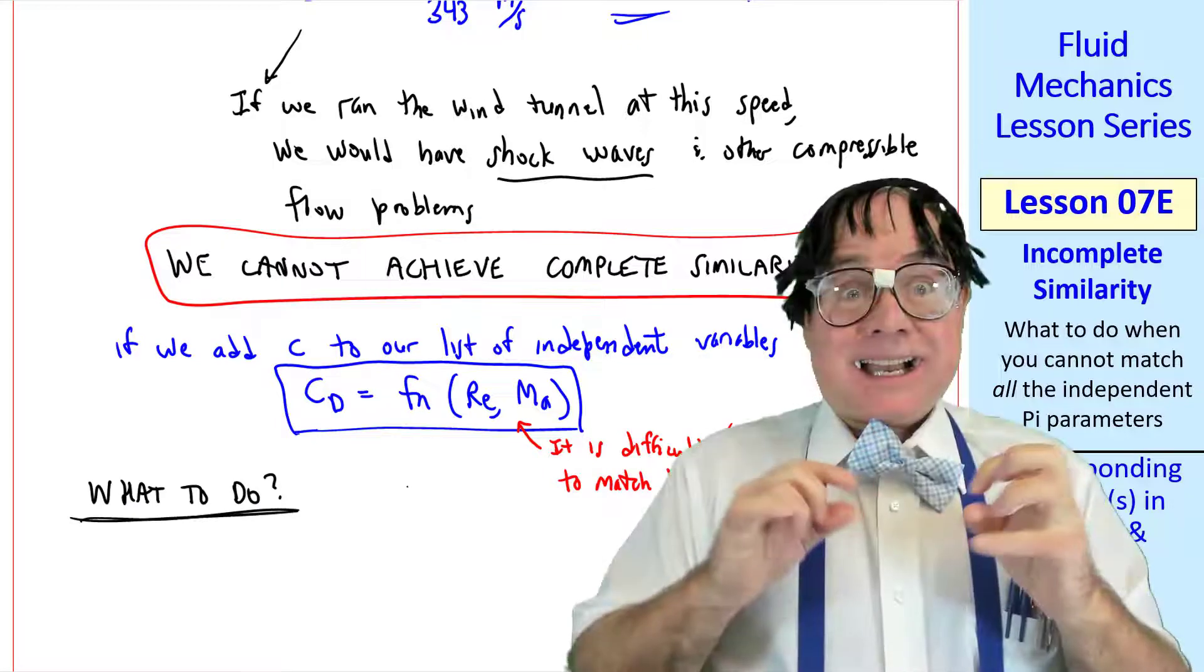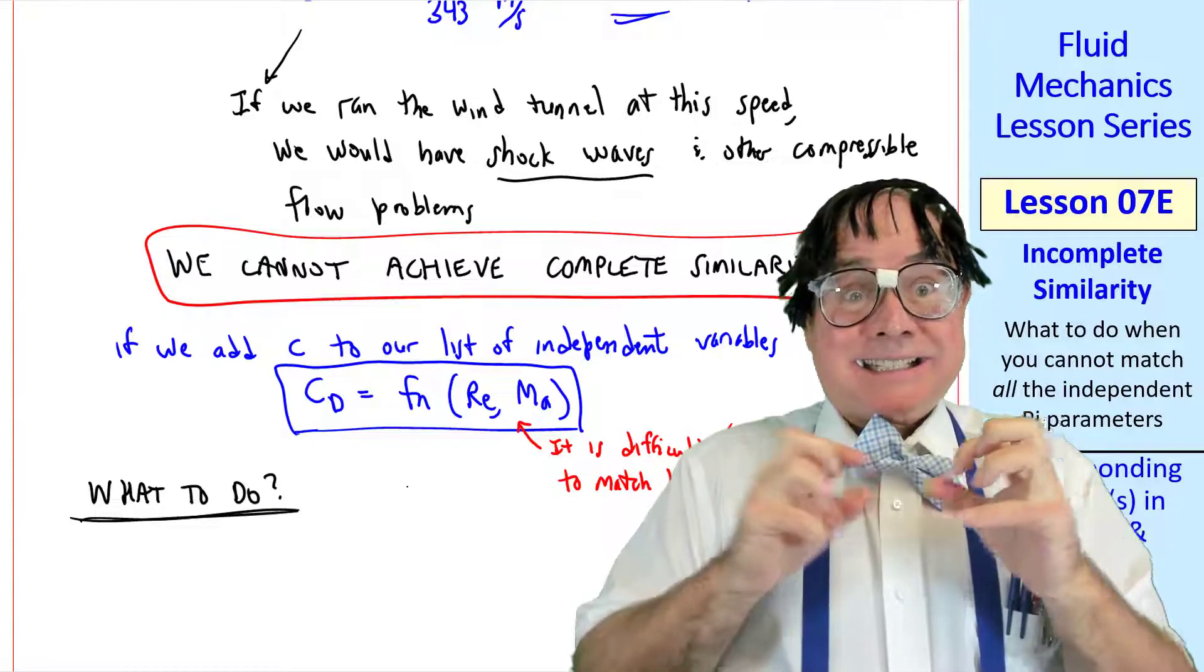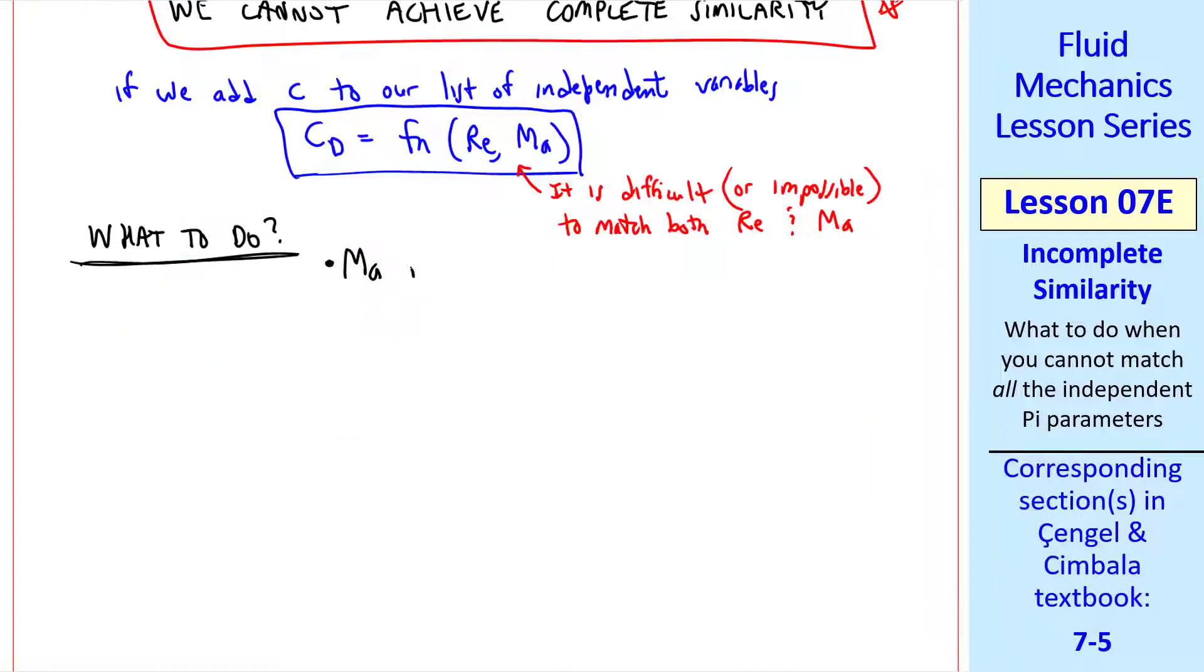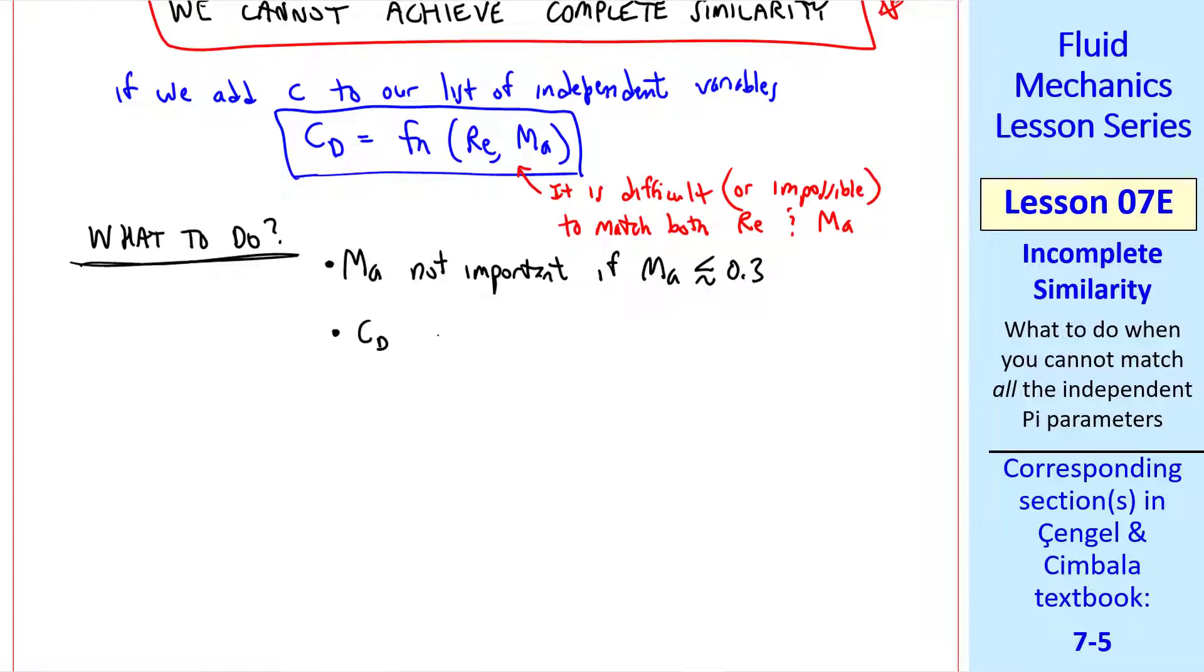So what do we do? Well, don't get too nervous. It turns out that Mach number is not important if it's less than about 0.3, where we say the flow is nearly incompressible. It also turns out that CD, the drag coefficient, often becomes Reynolds number independent at high enough Reynolds number. So we can extrapolate.